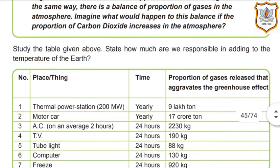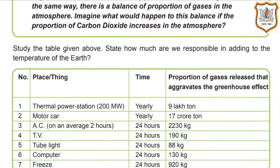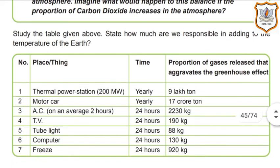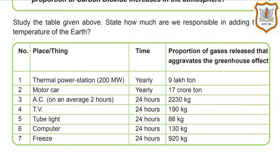See the table in your textbook showing how much we are responsible for adding to Earth's temperature. The first column shows place or thing, then the time, and the proportion of gases released that aggravate the greenhouse effect. Thermal power station (200 MW): yearly 9 lakh tons. Motor car: yearly 17 crore tons. AC (2 hours average): 2,230 kg. TV (24 hours): 190 kg. Tube light (24 hours): 88 kg. Computer (24 hours): 130 kg. Refrigerator (24 hours): 920 kg.